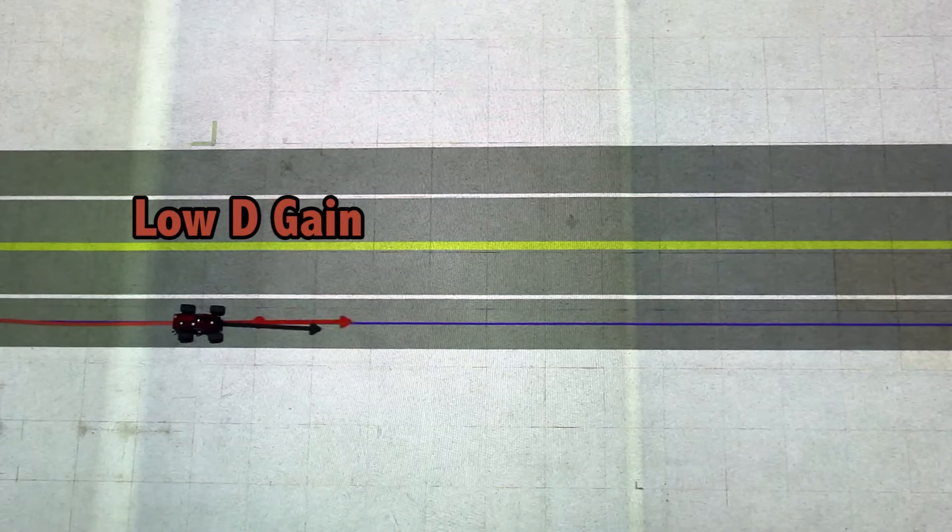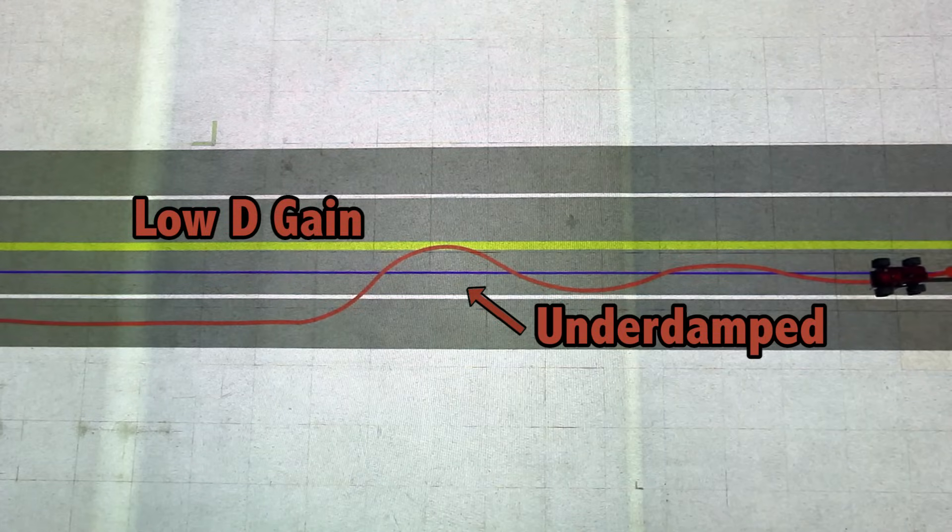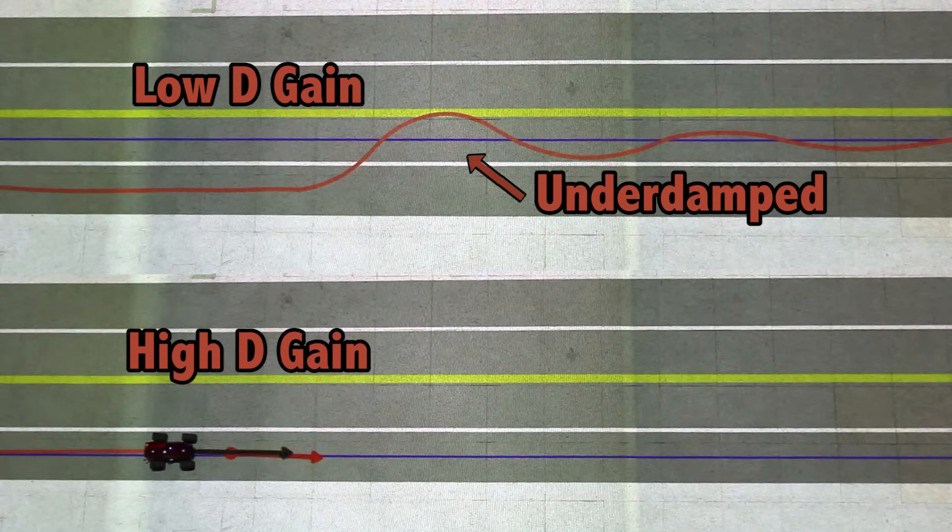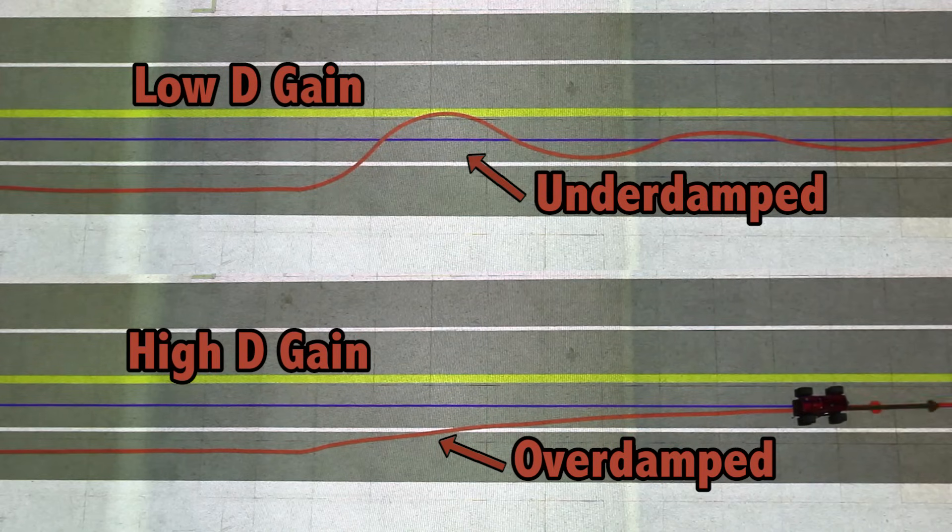Fixing the proportional gain, if the derivative gain is too low, the system will be what is called underdamped, and it will still oscillate. If the derivative gain is too high, the system will be what is called overdamped, and will take a long time to correct for offsets.